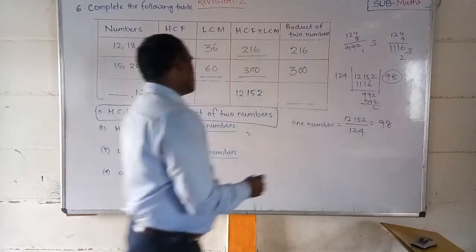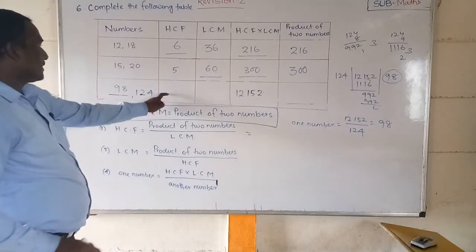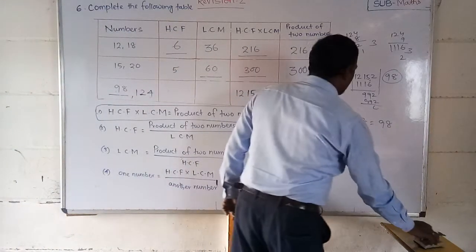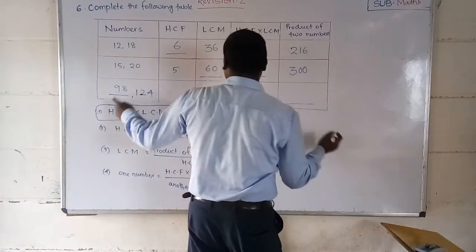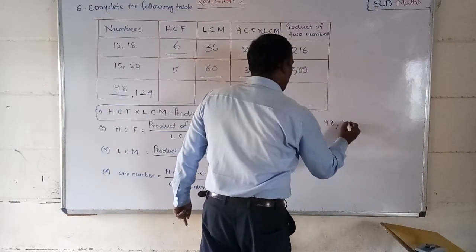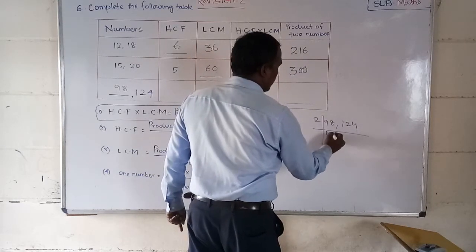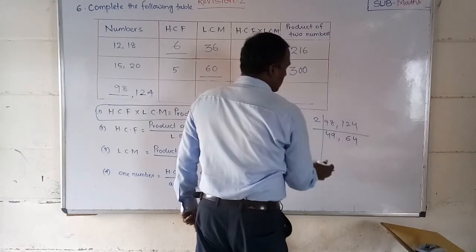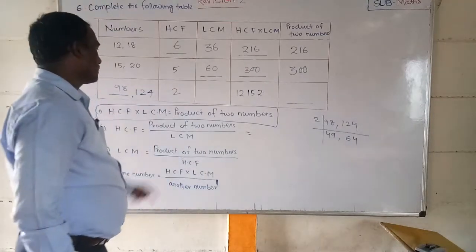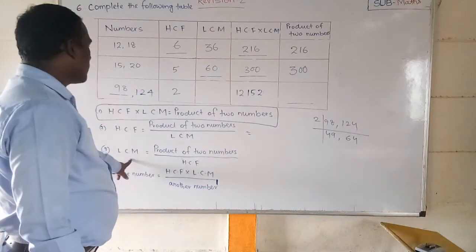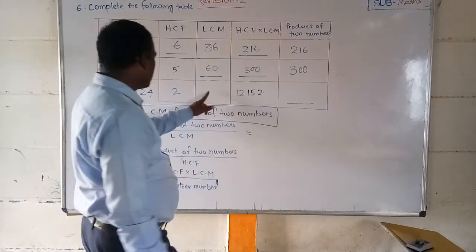After dividing, we get 98. So the missing number is 98. Now we should find out the HCF. We divide and find HCF is equal to 2. So the HCF of these numbers is 2.